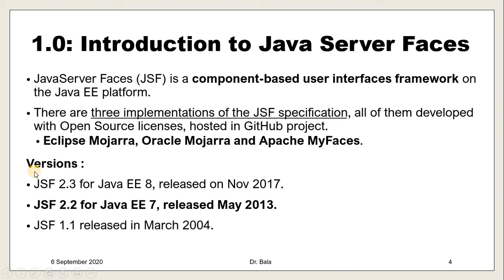JSF versions include JSF 1.1, released in 2004; JSF 2.2, released in 2013; and JSF 2.3, released in 2017. JSF 2.2 is a stable version where Managed Bean is available. In JSF 2.3, Managed Bean is deprecated and CDI was introduced. We are going to use JSF 2.2, which supports J2EE 7.